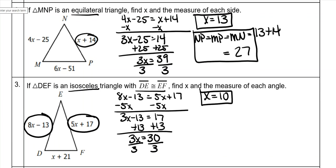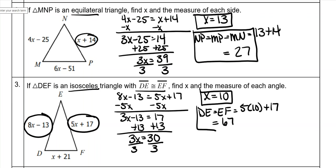Then I need to find the measure of each side. DE is equal to EF, which means I just need to plug x into one of those — those are the two that I circled already. So 5 times 10 plus 17 is 50 plus 17, which is 67. Then I'll plug x into the bottom one, which is DF. So that would be 10 plus 21, which makes DF equal to 31.